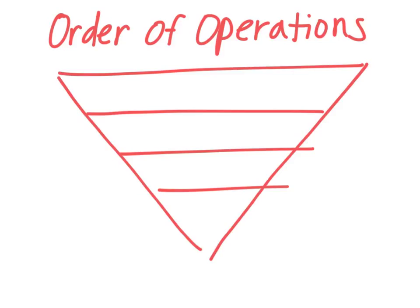The very first thing you should always look for when doing the order of operations are parentheses or brackets, division lines — so you might have something you have to do on the top and the bottom, those are two separate things — and absolute value symbols. You always do those things first.